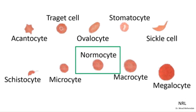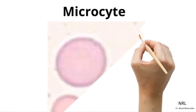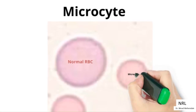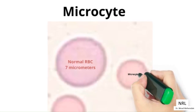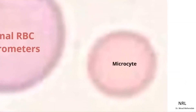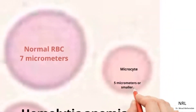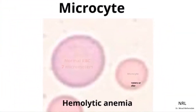Here we consider only frequently occurring cases and not all shape changes that might occur. Case 1: Microcytes. Microcytes are RBCs with a reduced diameter and decreased area compared to normal size. They are seen in hereditary hemolytic anemias.